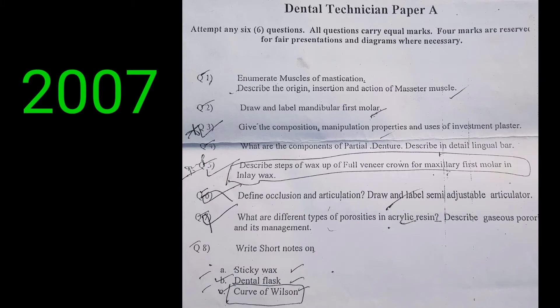Assalamualaikum viewers. Today in this video lecture I will share a few past papers of dental technician. This is the past paper of 2007, dental technician, Paper A. Attempt any six questions. All questions carry equal marks. Four marks are reserved for fair presentation, and diagram where necessary — diagrams are very necessary in dental technician paper.